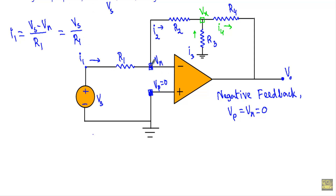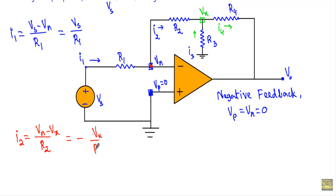Now what will be the value of I2? I2 is flowing from the inverting terminal to the X terminal. So I will take I2 equal to the higher potential Vn minus Vx, divided by the value of resistor R2. Since Vn equals zero, I get I2 equals minus Vx divided by R2. Now if I apply KCL at the inverting terminal, I1 is incoming and I2 is outgoing, so I can write I1 equals I2.